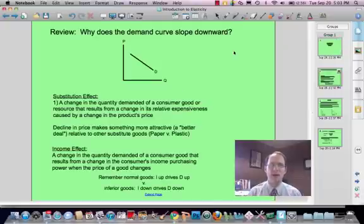First of all, a little bit of a review. Why does a demand curve slope downward? Well, we've talked about this idea of inverse relationship between price and quantity, and in fact, intuitively, that makes sense. As the price of something goes down, I'm likely to buy more of that product, and when the price goes up, I'm likely to buy less of that product.